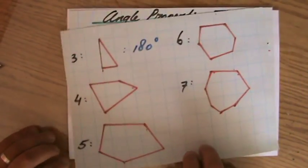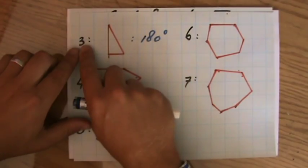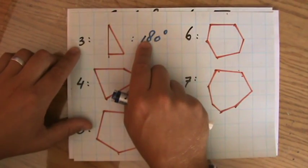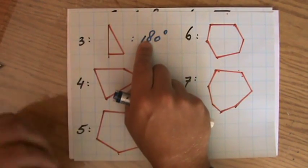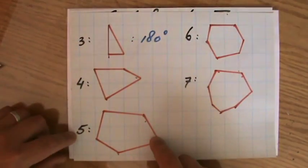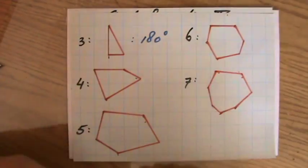So I created this sheet, and already for the triangle, I said the sum of the interior angles adds up to 180 degrees. And I have a quadrilateral, a pentagon, a hexagon, and a heptagon.